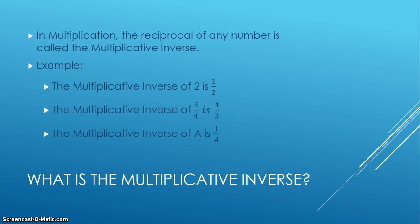One-half is the multiplicative inverse of two, four-thirds is the multiplicative inverse of three-fourths, and one over a is the multiplicative inverse of a, where a represents any number.